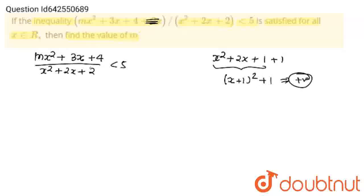So in an inequality, we can multiply positive term, cross-multiply. I am going to cross-multiply this, mx square plus 3x plus 4 equals 5x square plus 10x plus 10.